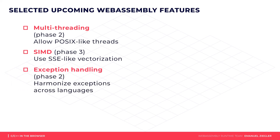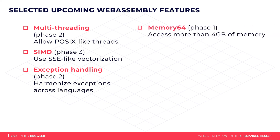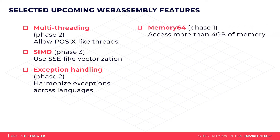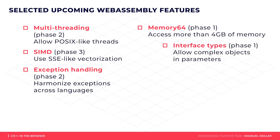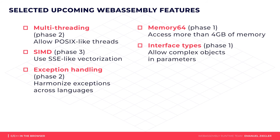The exception handling proposal will simplify how C++ and JavaScript exceptions behave in WebAssembly. If your application is very resource hungry, memory64 will allow for more than 4 gigabytes of RAM to be allocated. The interface types proposal is aiming at simplifying how different languages with different data types interact with each other, making it easier to exchange strings and arrays and call WebAssembly functions directly.